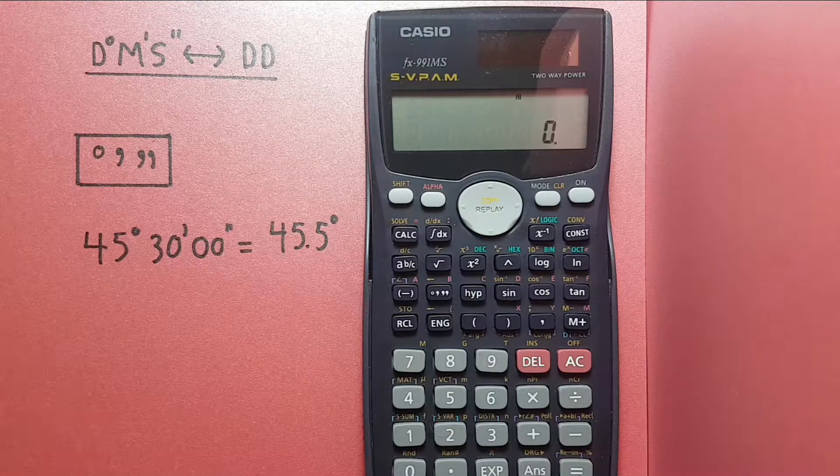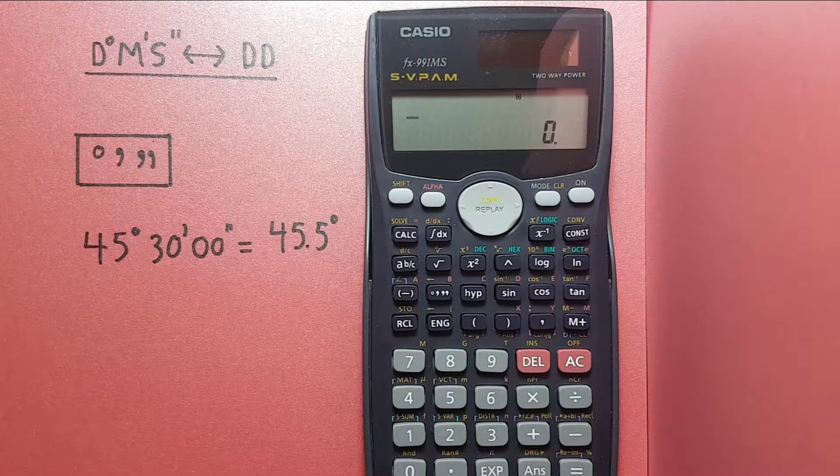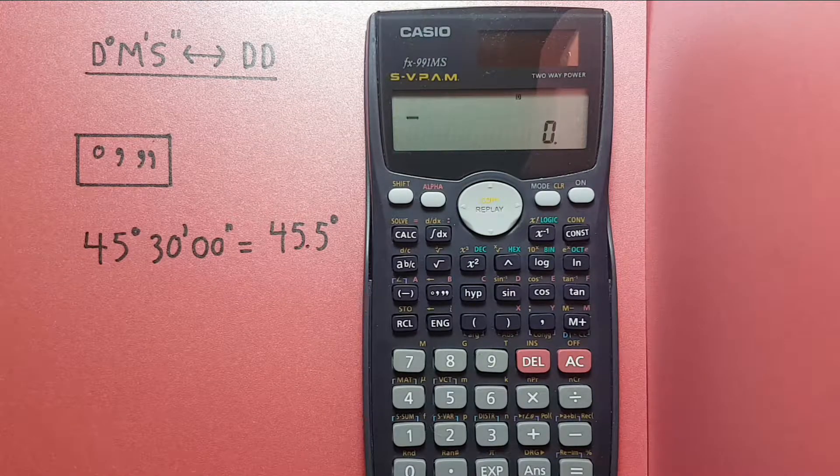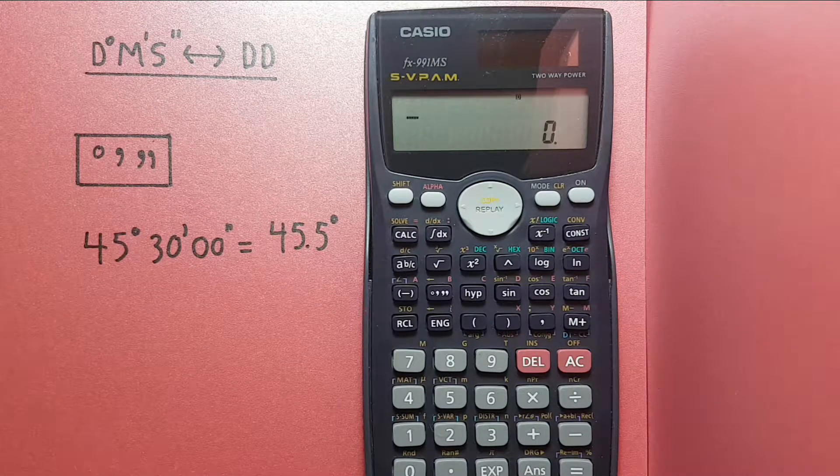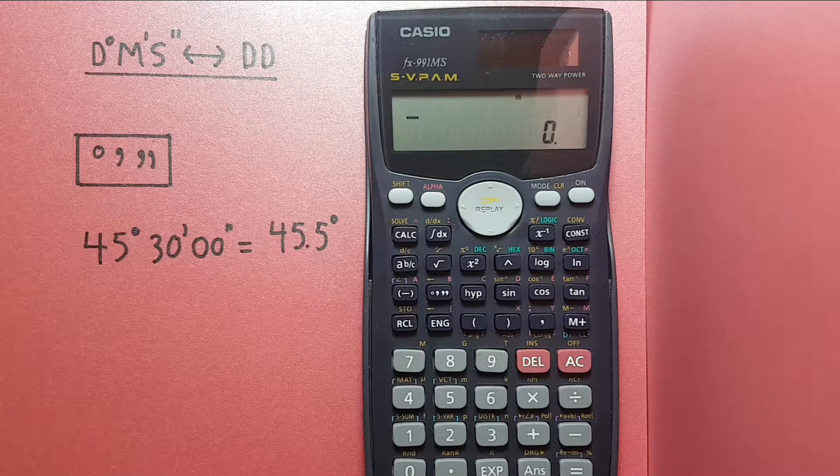Hello and welcome to HP Calcs. I'm Rick and today we will be looking at how to convert between decimal degrees and degrees minute seconds on the Casio FX-991 calculator.